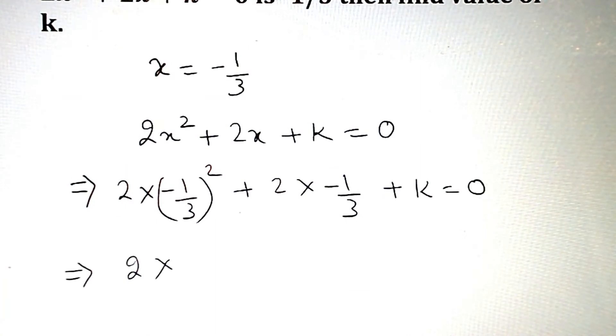So 2 into minus 1 ka square 1 hua hai, 3 ka square 9 hua hai, 2 by 9 minus 2 by 3 plus k equals 0.